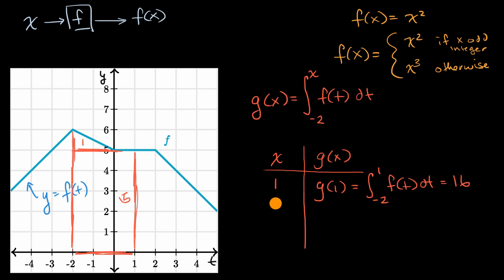What if x is equal to two? What is g of two going to be equal to? Pause this video and try to figure that out. Well, g of two is going to be equal to the definite integral from negative two. And now our upper bound is going to be our input into the function to two of f of t dt.